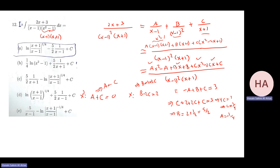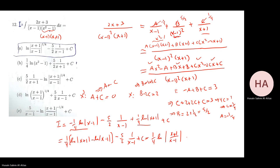So the integral i = -¼·ln|x-1| - (5/2)·(1/(x-1)) + ¼·ln|x+1| + C. Combining the logarithm terms: ¼·ln|(x+1)/(x-1)| - 5/(2(x-1)) + C. The ¼ can be taken as a power, giving ln|(x+1)/(x-1)|^(1/4) - 5/(2(x-1)) + C.